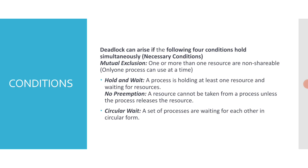No preemption means a resource cannot be taken from a process unless the process releases it voluntarily. In a circular wait, a set of processes are waiting for each other in circular form. These four are the necessary conditions for a deadlock to occur.